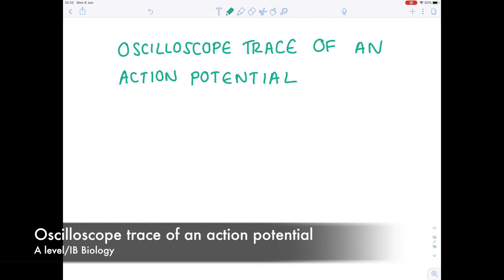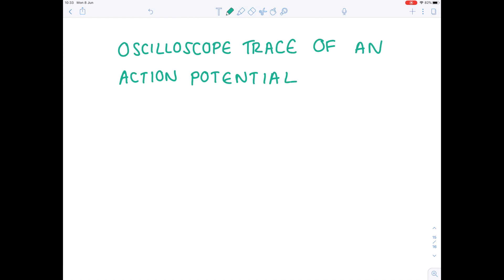In today's A-level IB Biology lesson, we're going to be looking at the oscilloscope trace of an action potential.